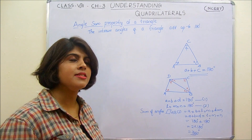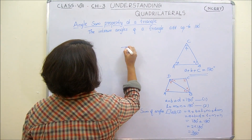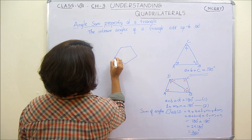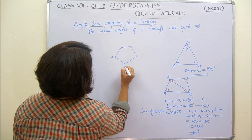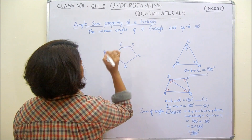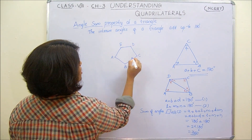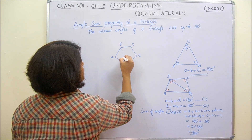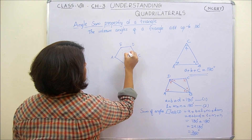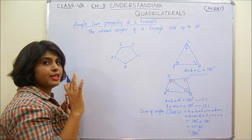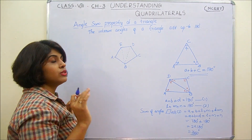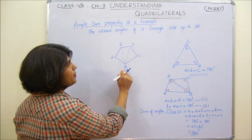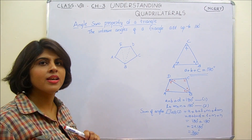Then what would be the sum of interior angles of a pentagon? Consider a pentagon ABCDE. Drawing the diagonals from B, these diagonals divide the pentagon into three triangles: triangle ABE, triangle EBD, and triangle DBC.